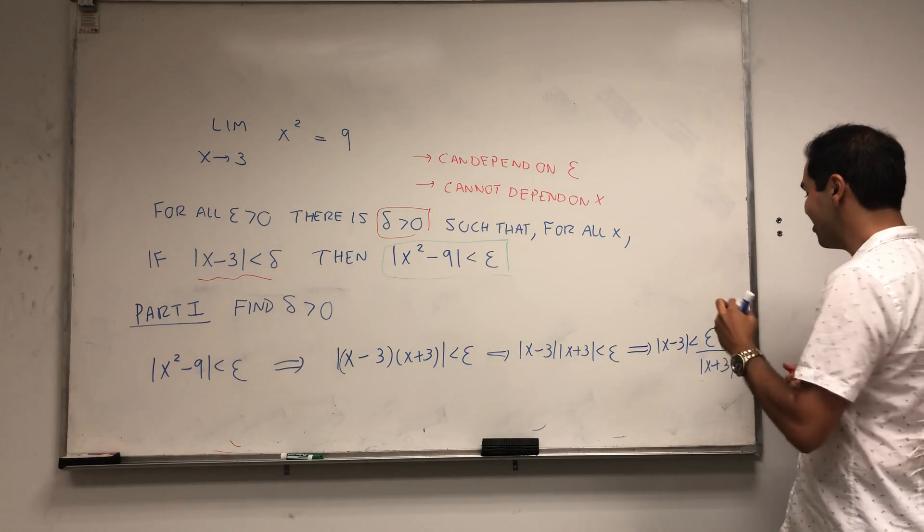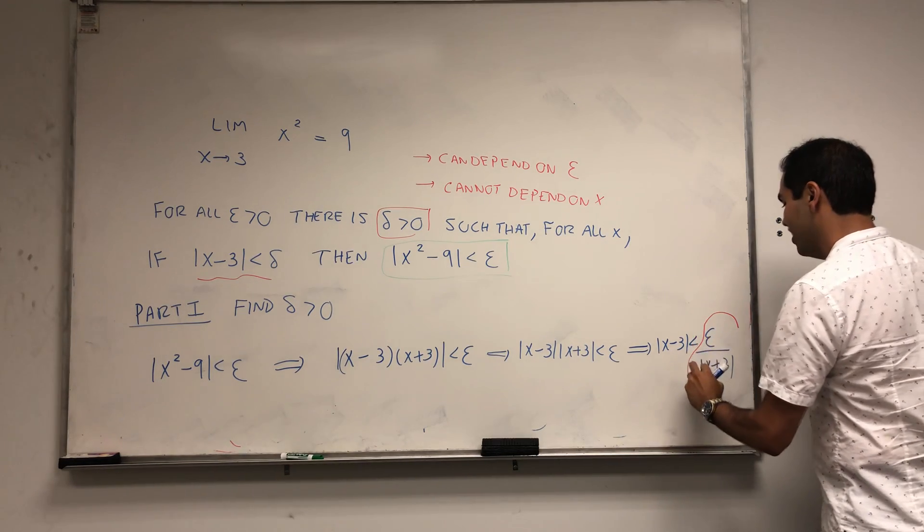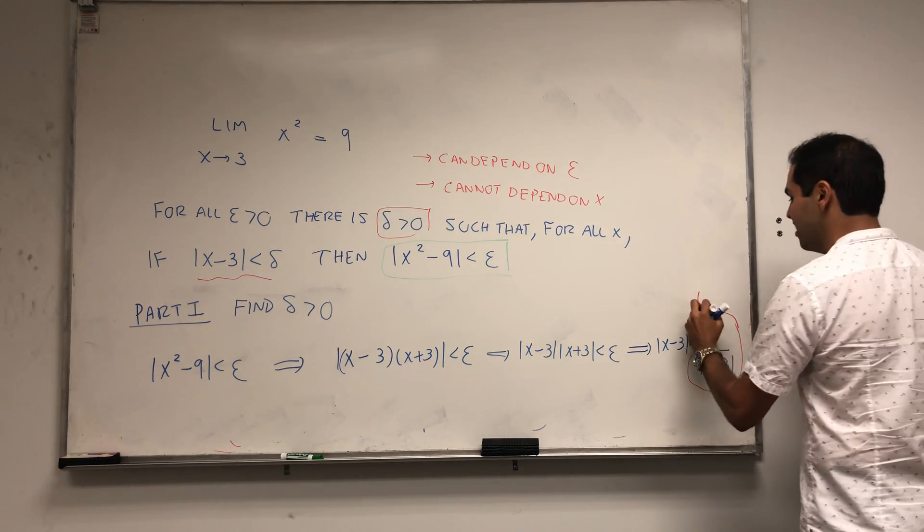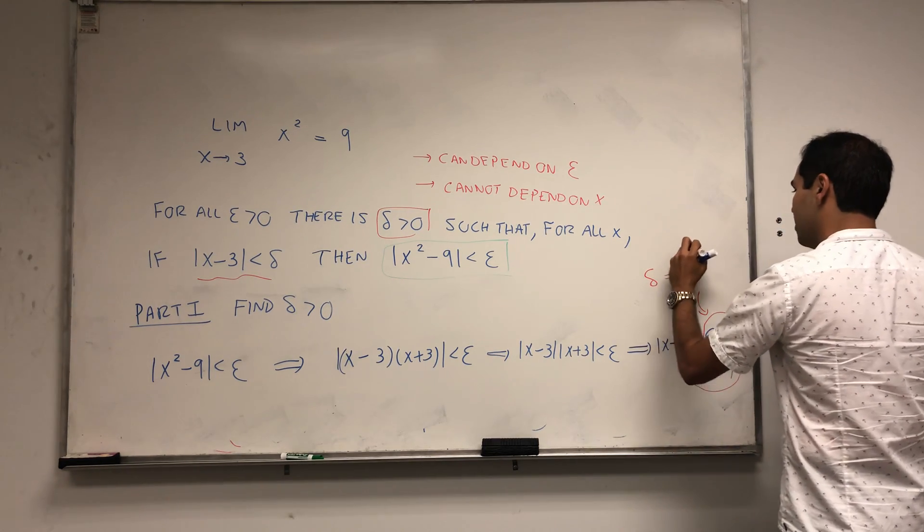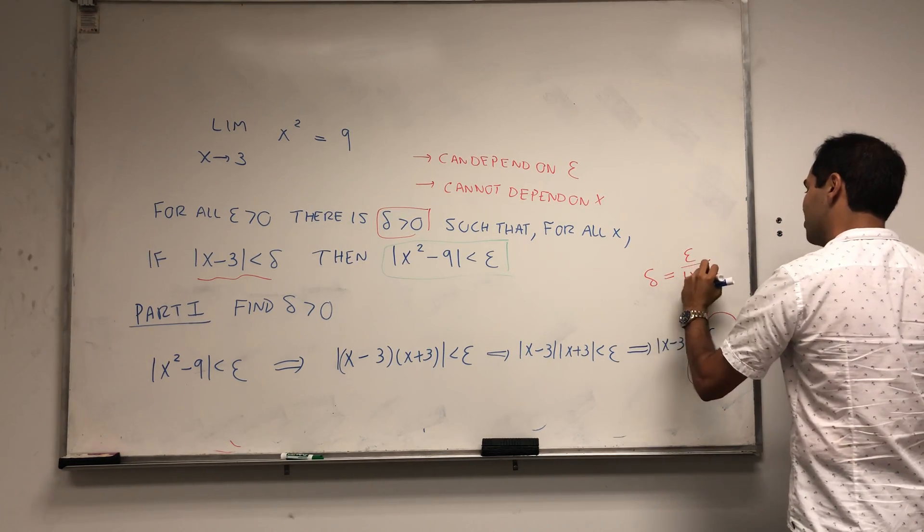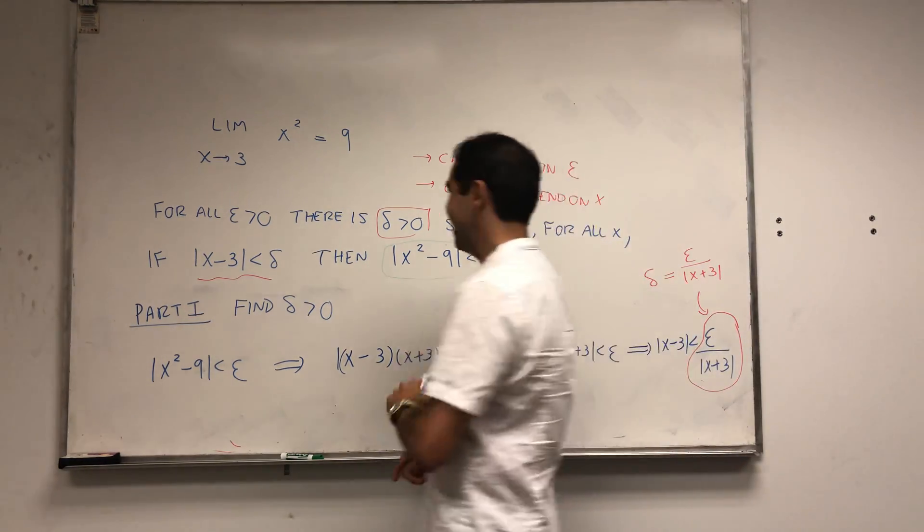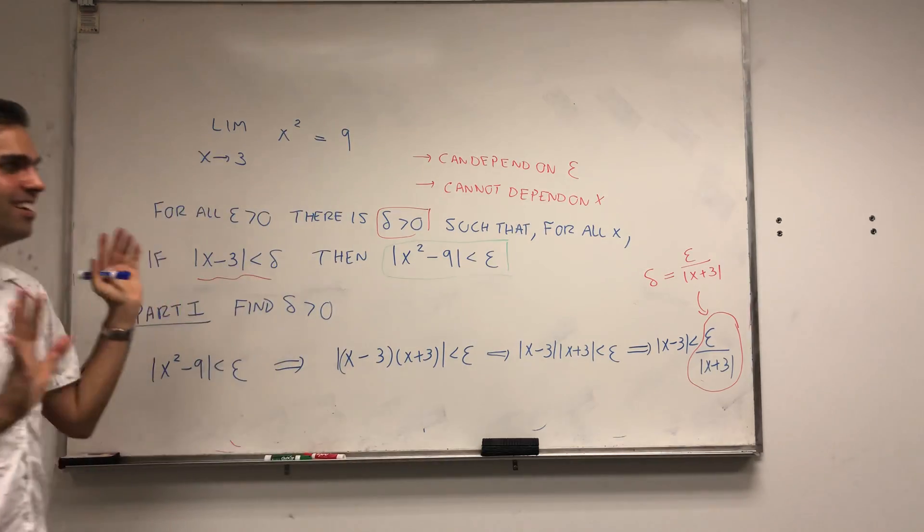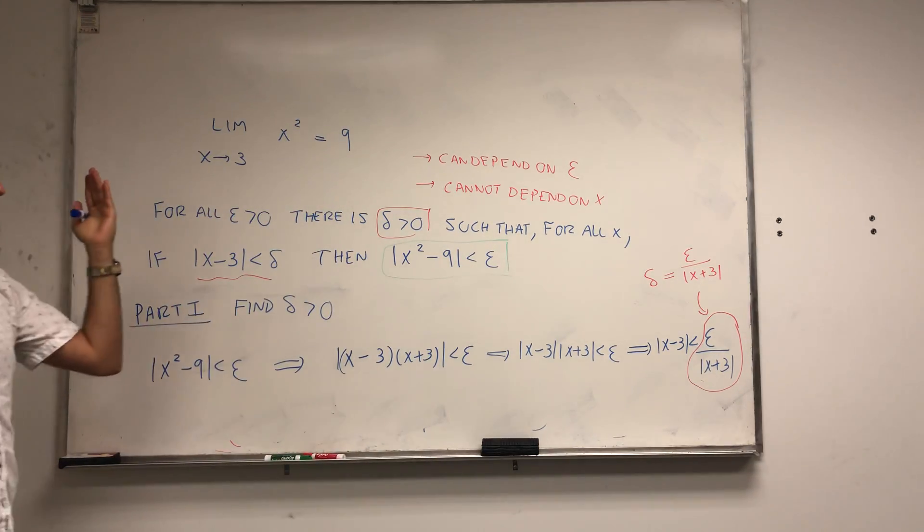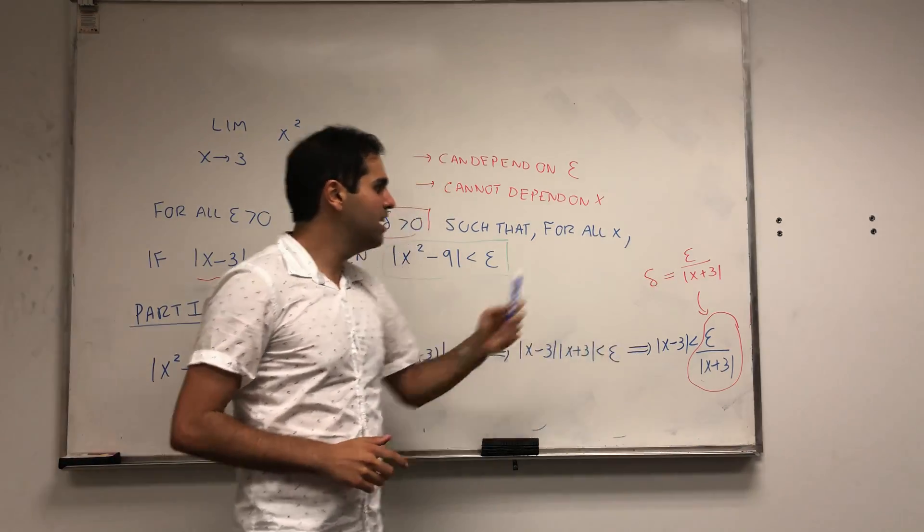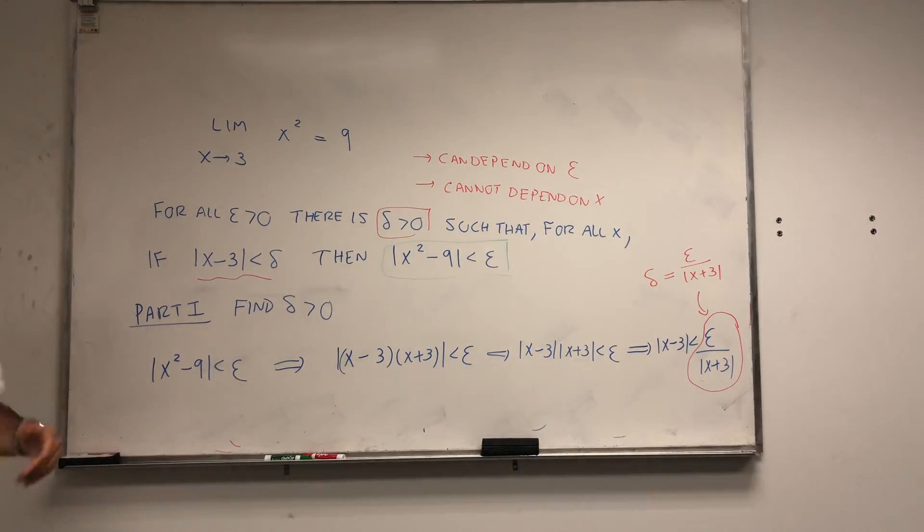It's less than epsilon over x plus 3. You might say, aha, great, we want x minus 3 to be less than delta, so let's just let delta be this, epsilon over x plus 3. But caveat though. Delta could depend on epsilon, but it cannot depend on x.